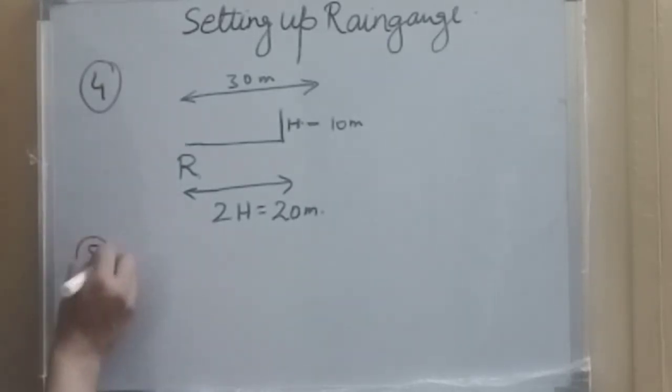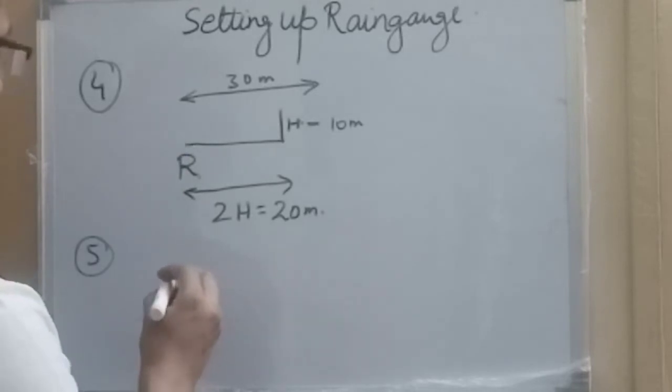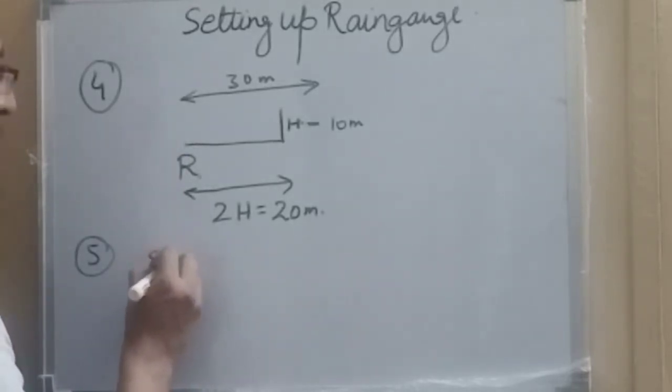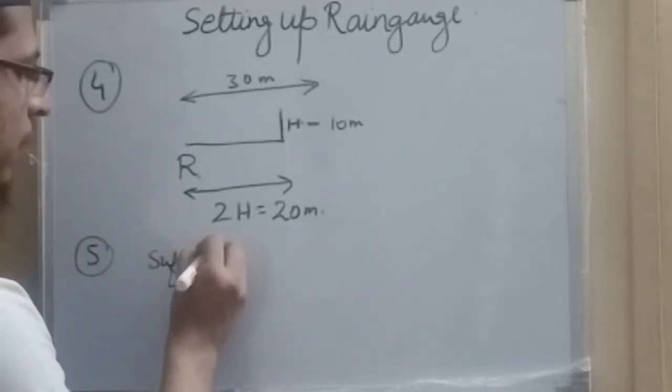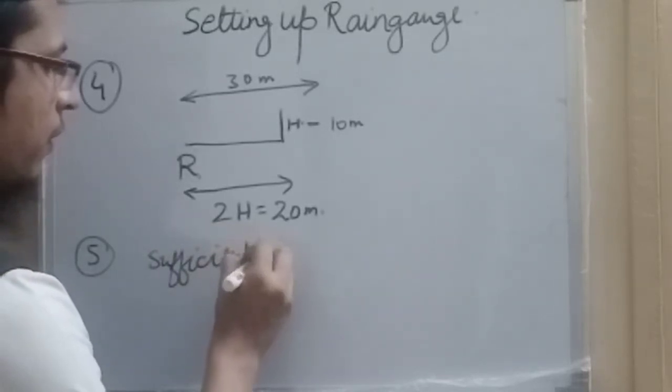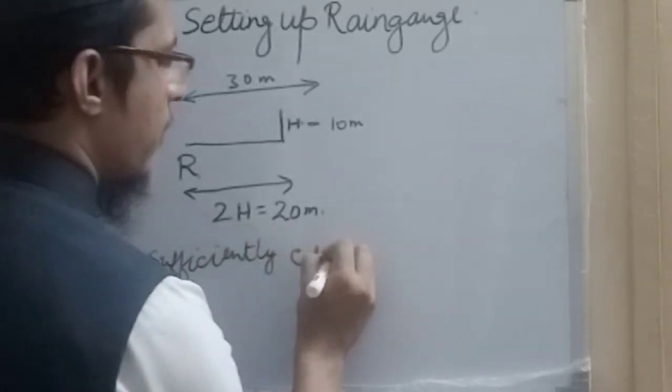Now the fifth point is that the rain gauge should be placed sufficiently close to the ground surface, close to the ground surface.